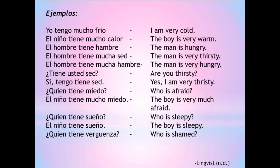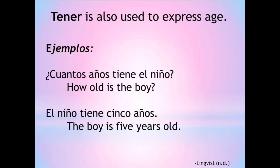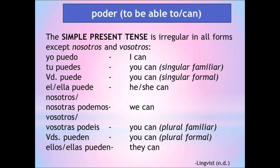Examples: Yo tengo mucho frío — I am very cold. El niño tiene mucho calor — The boy is very warm. El hombre tiene hambre — The man is hungry. El hombre tiene mucha sed — The man is very thirsty. ¿Tiene usted sed? — Are you thirsty? Sí, tengo mucha sed — Yes, I am very thirsty. ¿Quién tiene miedo? — Who is afraid? El niño tiene mucho miedo — The boy is very much afraid. ¿Quién tiene sueño? — Who is sleepy? El niño tiene sueño — The boy is sleepy. ¿Quién tiene vergüenza? — Who is ashamed? Tener que plus infinitive is used to express obligation or necessity. Example: Tengo que estudiar la lección. Note that to denote obligation or necessity in general, use haber que plus infinitive. Example: Hay que trabajar — One must work / It is necessary to work. Tener is also used to express age. ¿Cuántos años tiene el niño? — How old is the boy? El niño tiene cinco años — The boy is five years old.